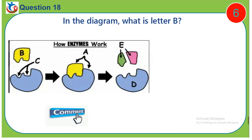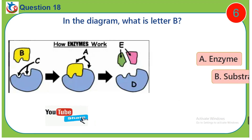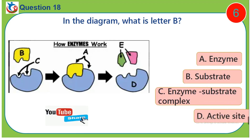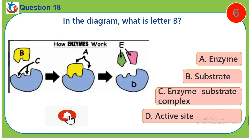Question 18. In the diagram, what is letter B? A. Enzyme. B. Substrate. C. Enzyme substrate complex. D. Active site.